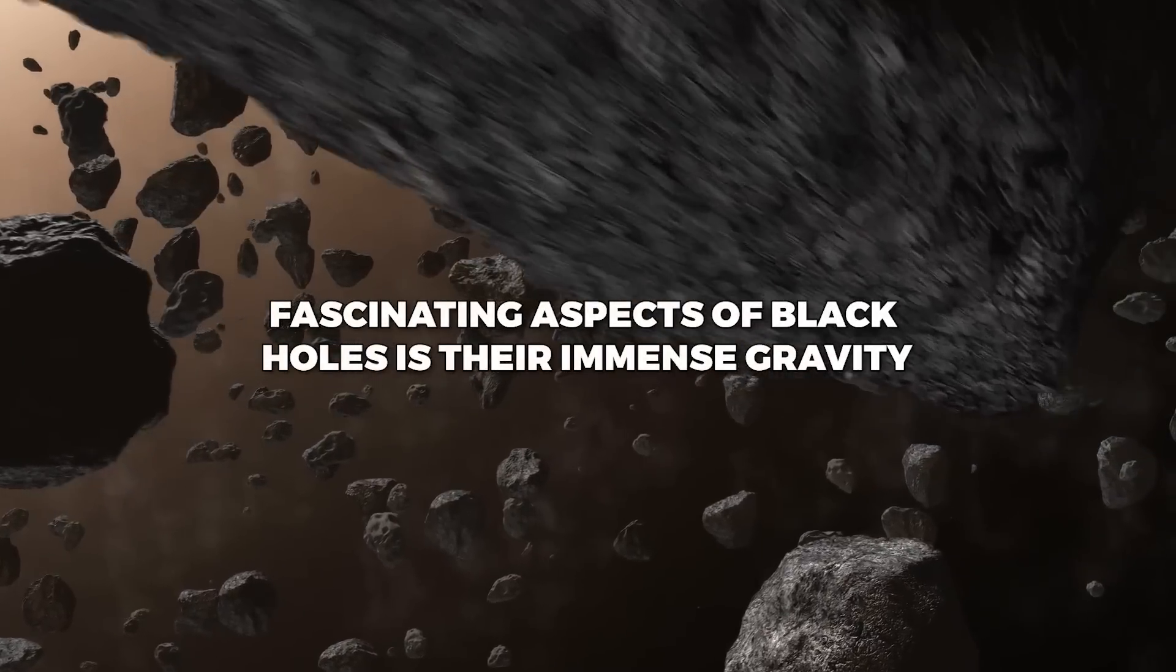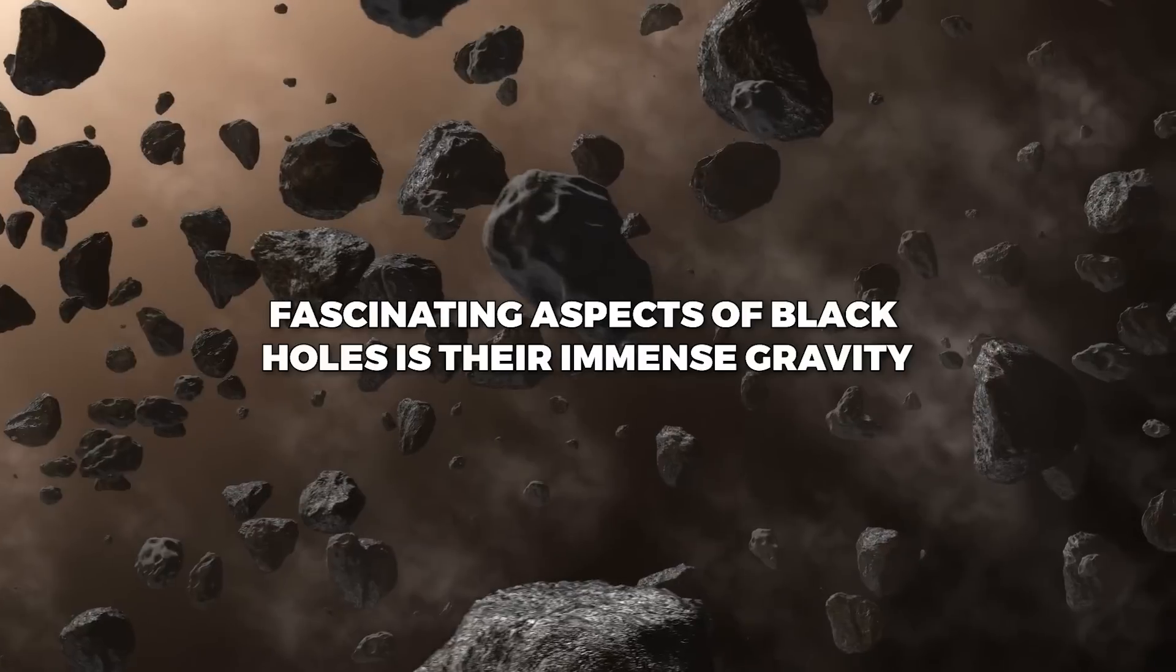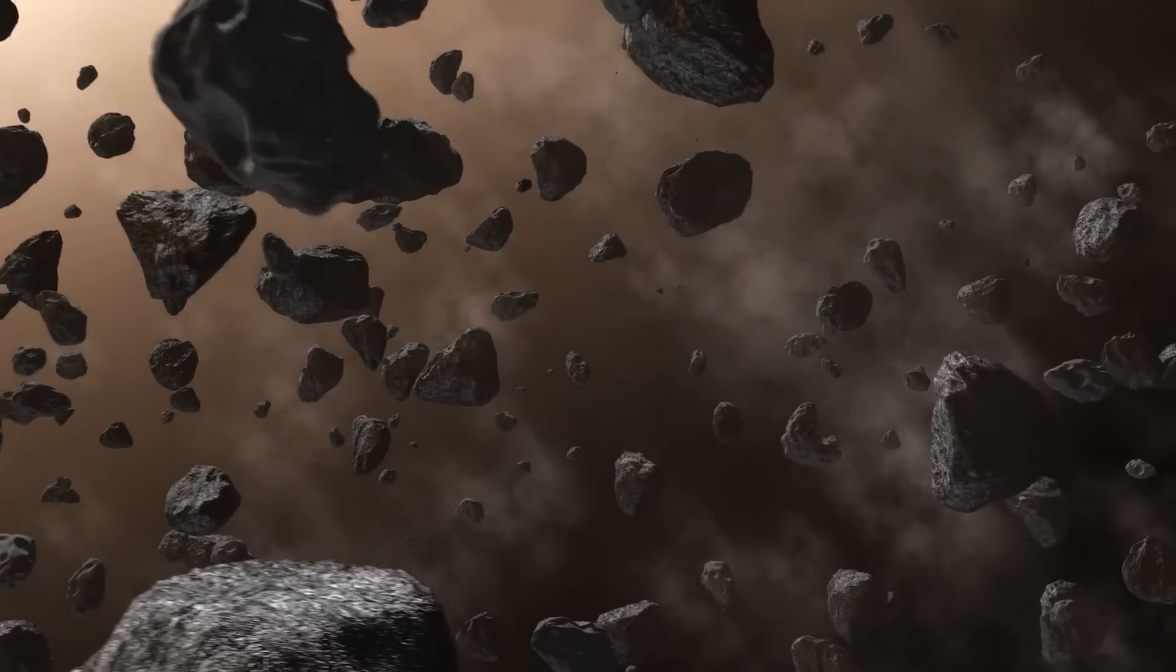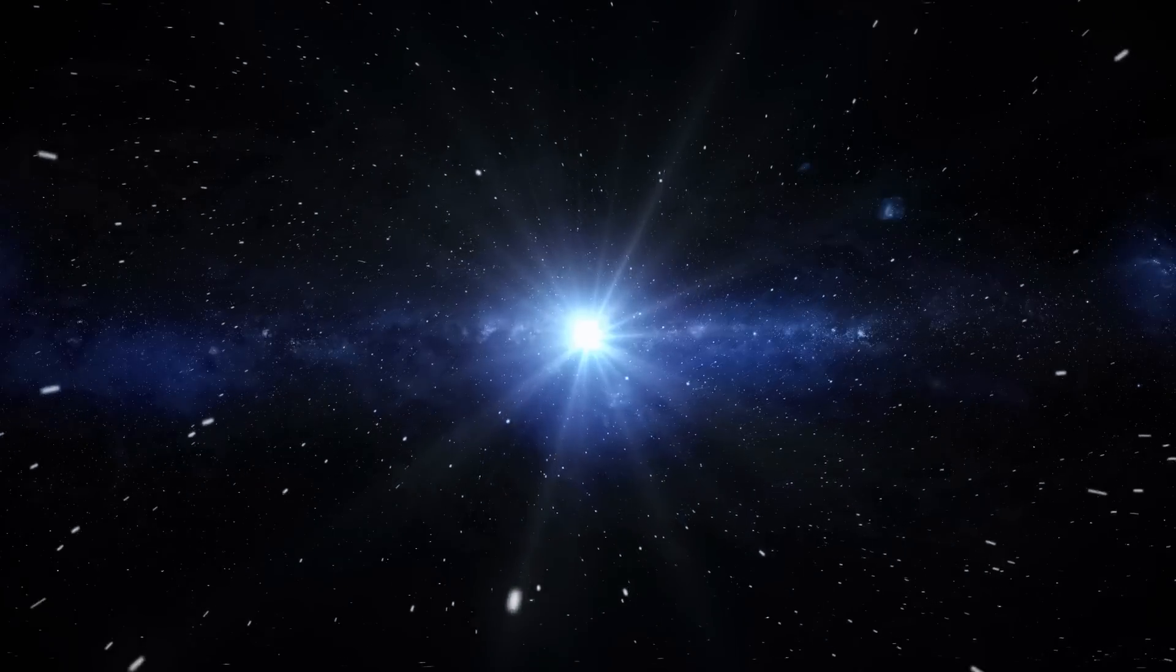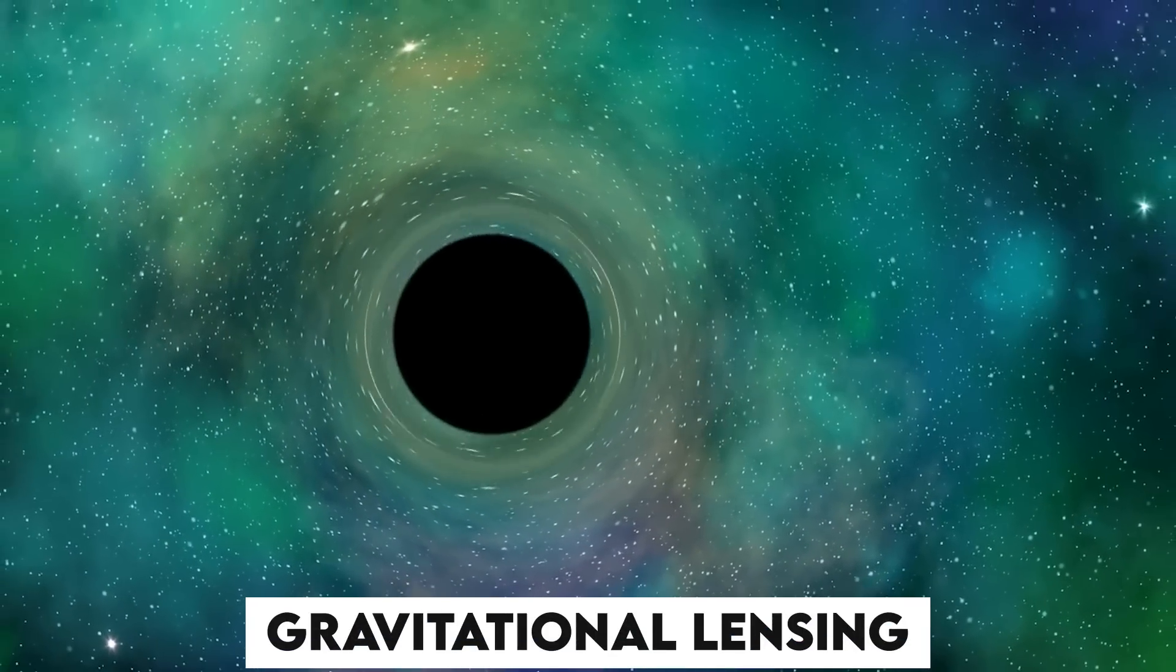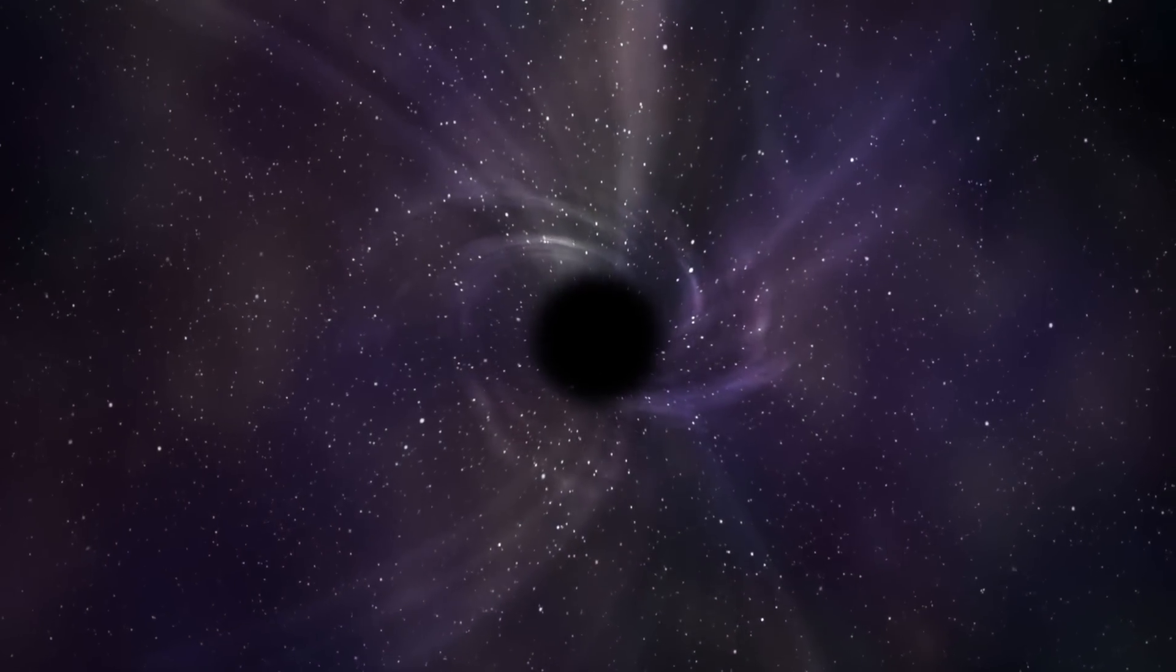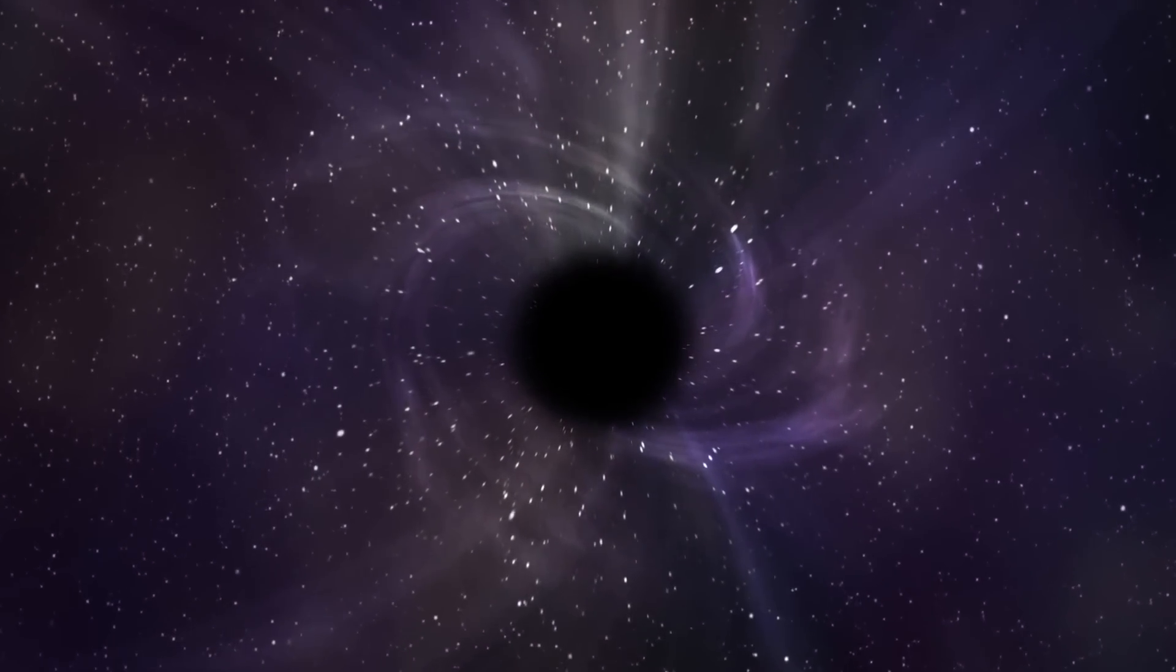One of the most fascinating aspects of black holes is their immense gravity. The gravitational pull of a black hole is so strong that it warps the surrounding space-time, causing time to slow down and space to be curved. This phenomenon is known as gravitational lensing, and it can be observed when light from a distant object is bent around a black hole, creating a distorted image.